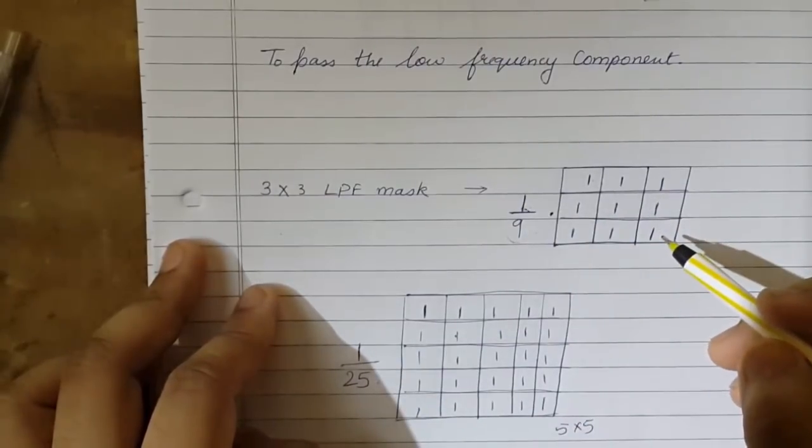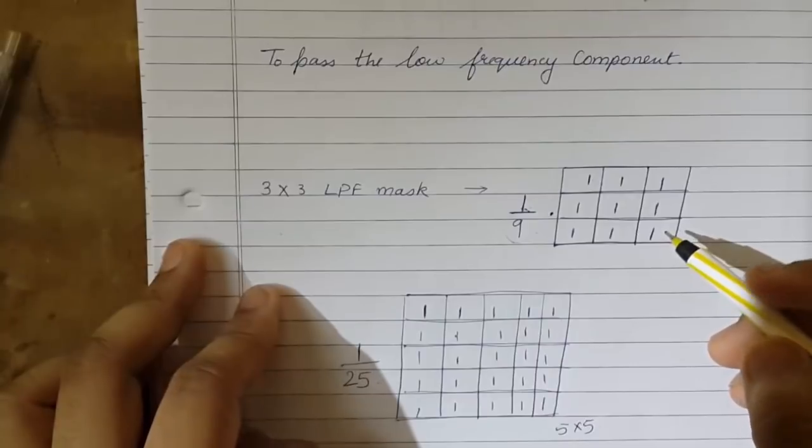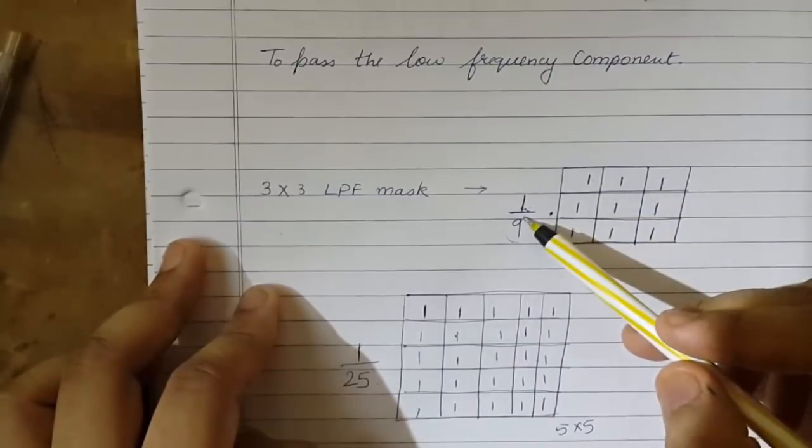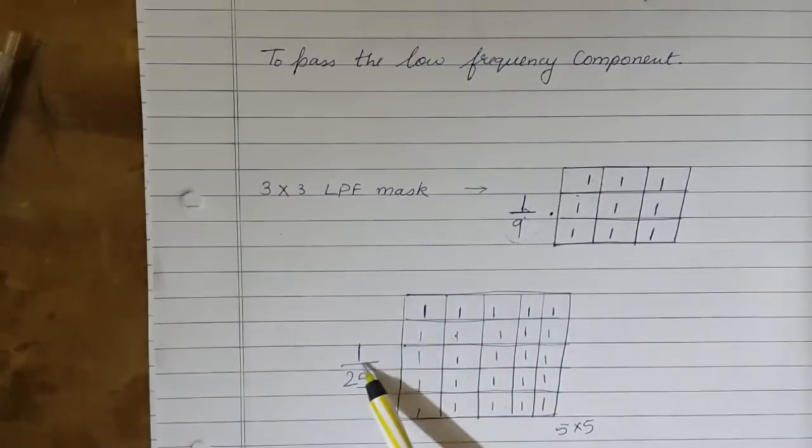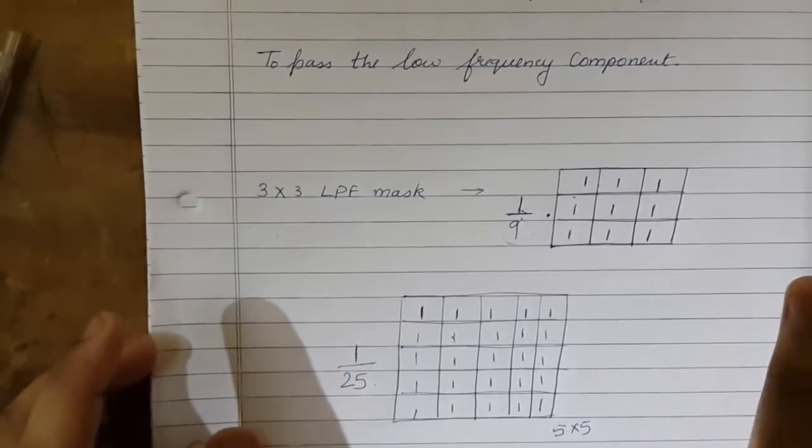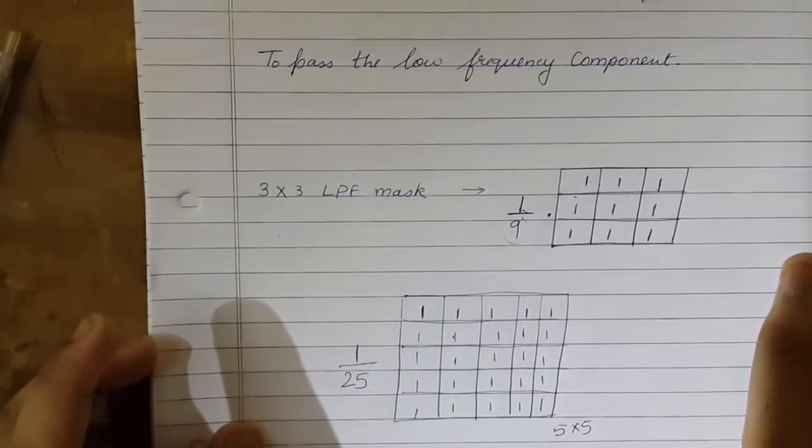The scaling factors of the LPF masks are very easy to remember. This is a square of 3 and the matrix is of 3 by 3. This is a square of 5 and the matrix is of 5 by 5. Now let us see how to apply low-pass filter mask on an actual image.